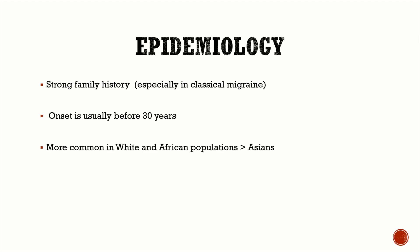Migraine has a very strong family history, especially in classical or neurological migraine. Onset is usually in adolescence and late adulthood, typically before the age of 30. Migraine is more common in white and African populations compared to the Asian population.